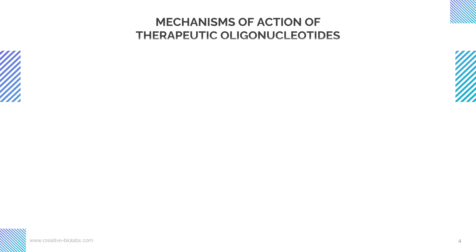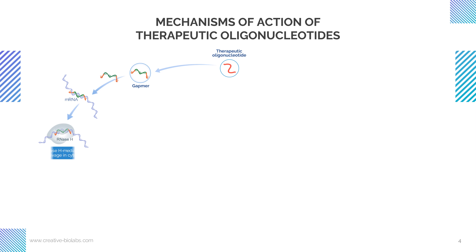Next, let's explore the mechanisms of action of these therapeutic oligonucleotides. As shown here, the gene silencing action mechanism of Gapmer relies on cleavage or degradation through the action of RNase H in the cytosol and nucleus. The binding of Gapmer to the target mRNA has higher affinity due to the modified RNA flanking regions, as well as resistance to degradation by nucleases.